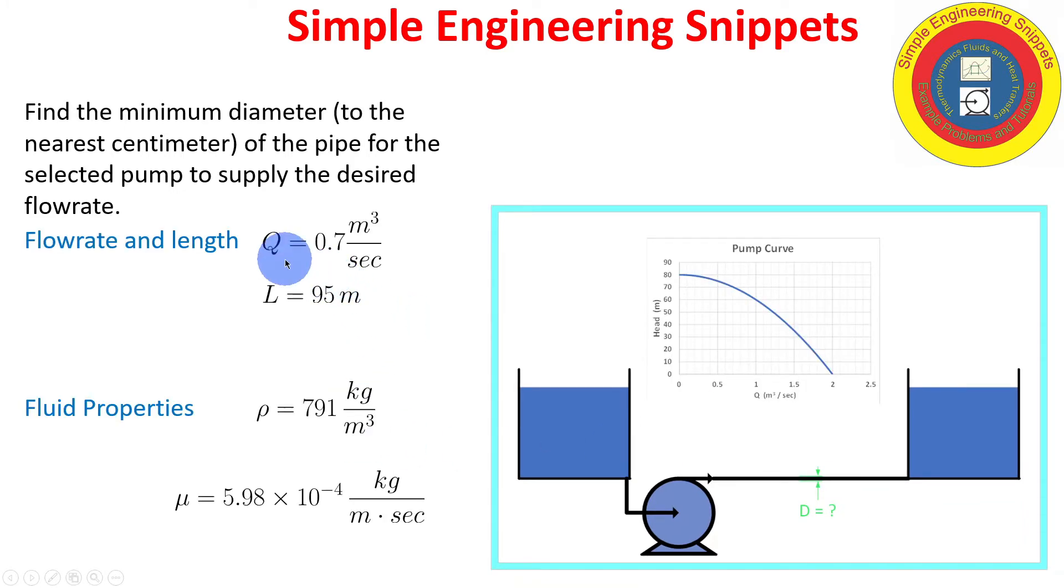We have a lot of data provided including the desired flow rate of 0.7 cubic meters per second. So we hope to size our pipe so we are going to be delivering exactly this flow rate. However, likely we're going to have to slightly exceed that because we are limited to selecting the diameter to the nearest centimeter. So we're not going to be doing 32.634 centimeters. It's either going to be 32 or 33. The length of the pipeline is 95 meters.